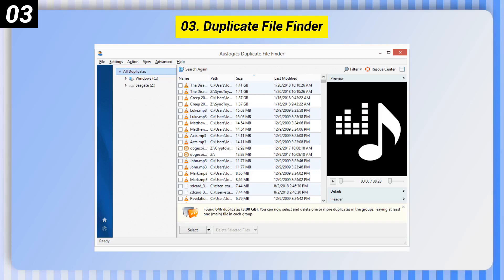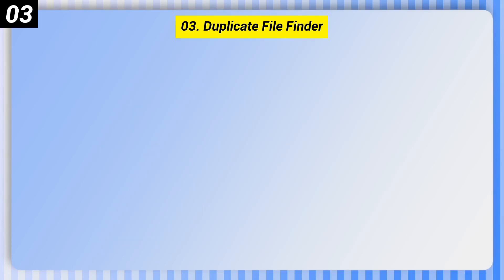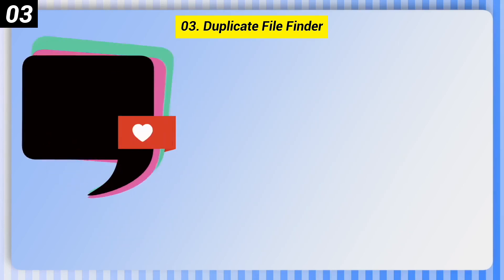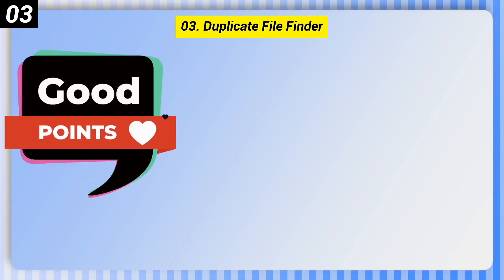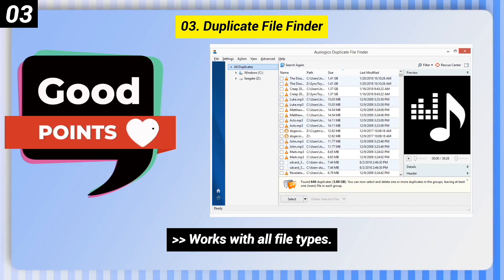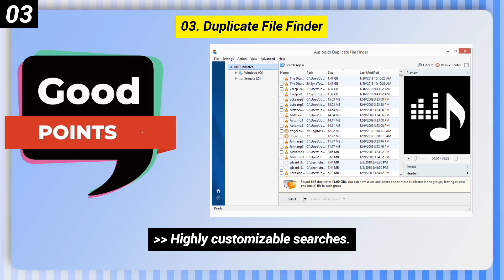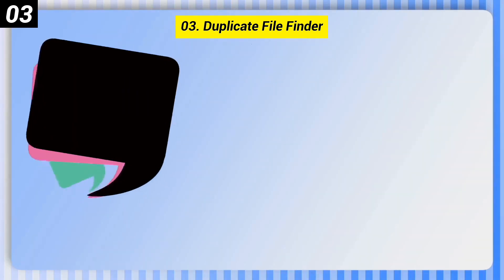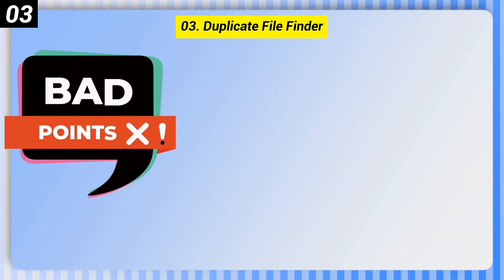Number 3: Duplicate File Finder. Here are some good points of this one. It easily and quickly weeds out multiple instances of files, works with all file types, and offers highly customizable searches.